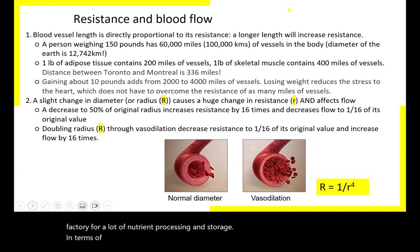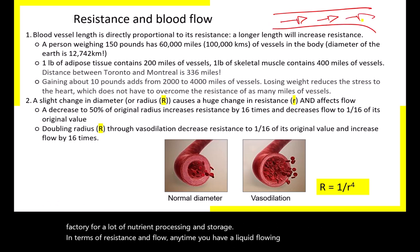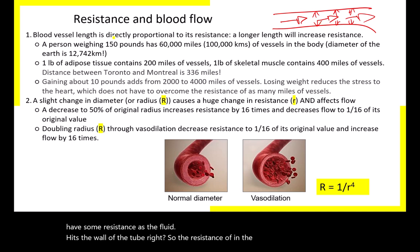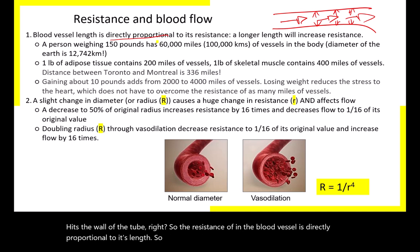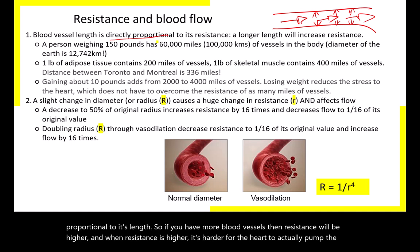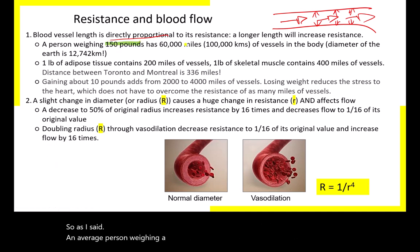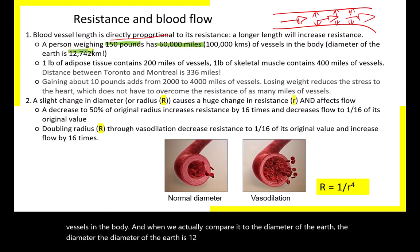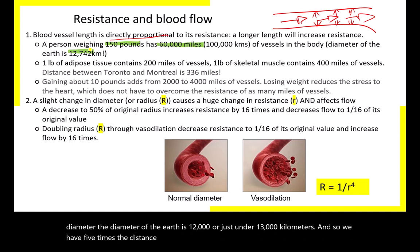In terms of resistance in flow, any time a liquid flows through a tube, there is resistance as the fluid hits the wall. Resistance in the blood vessel is directly proportional to its length — more blood vessels means higher resistance, making it harder for the heart to pump blood. The average person weighing 150 pounds has 60,000 miles or 100,000 kilometers of blood vessels.